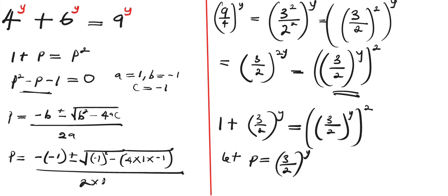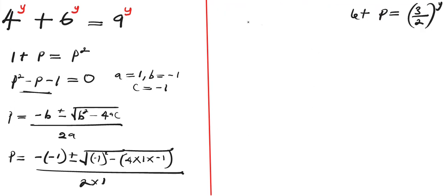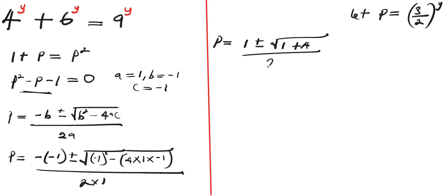Continuing with the quadratic formula, we have p = (1 ± √(1 + 4)) / 2, which simplifies to p = (1 ± √5) / 2.